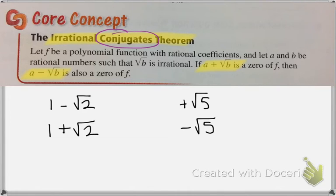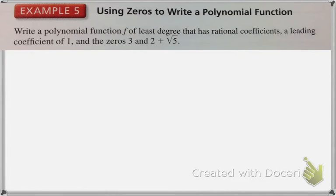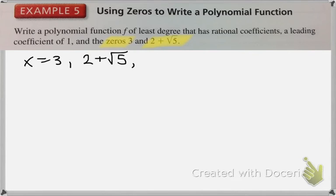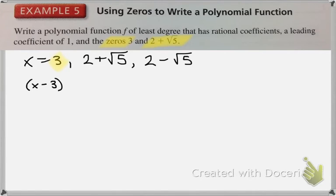So if you are told one of the zeros, they may not tell you the other, but it is implied that it also must exist. If they ask you to write a polynomial function of the least degree that has rational coefficients and a lead coefficient of 1, and it tells you that the zeros are 3 and 2 plus root 5 — we know that according to the irrational conjugates theorem, there must be another zero at 2 minus root 5. Which means the least degree of this function will be 3. We are going to do the reverse of what we have been doing: taking zeros and turning them into factors.